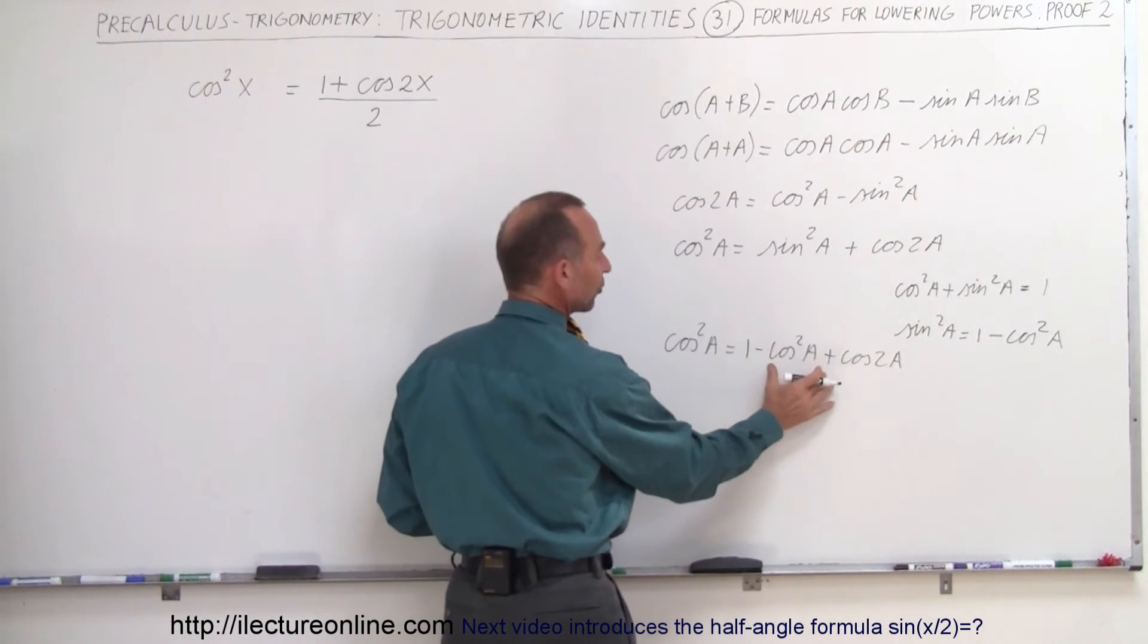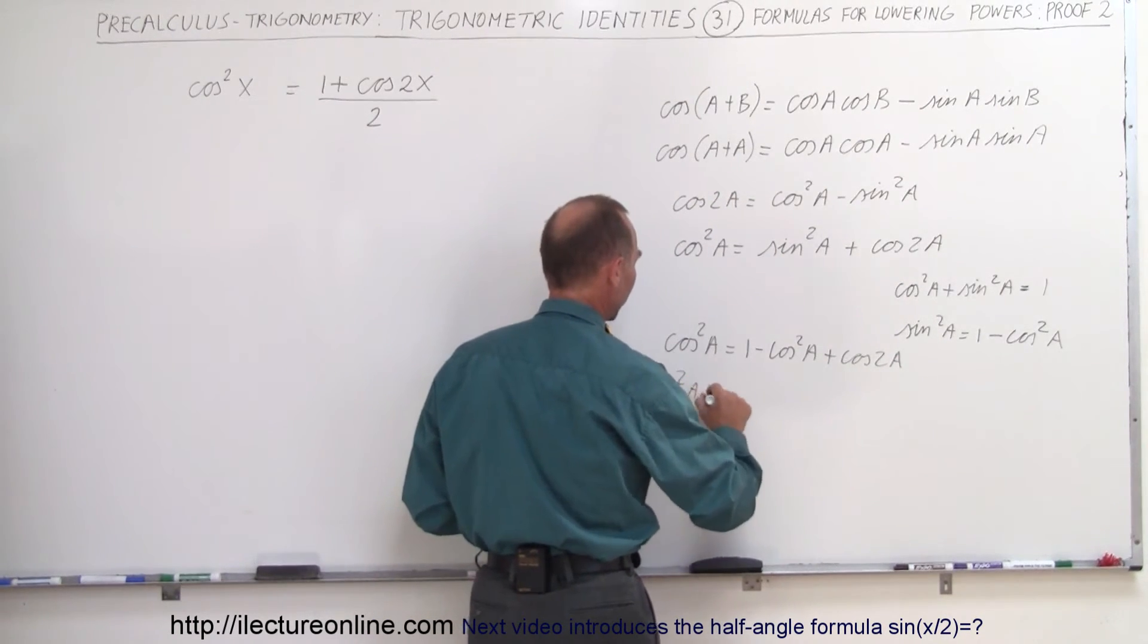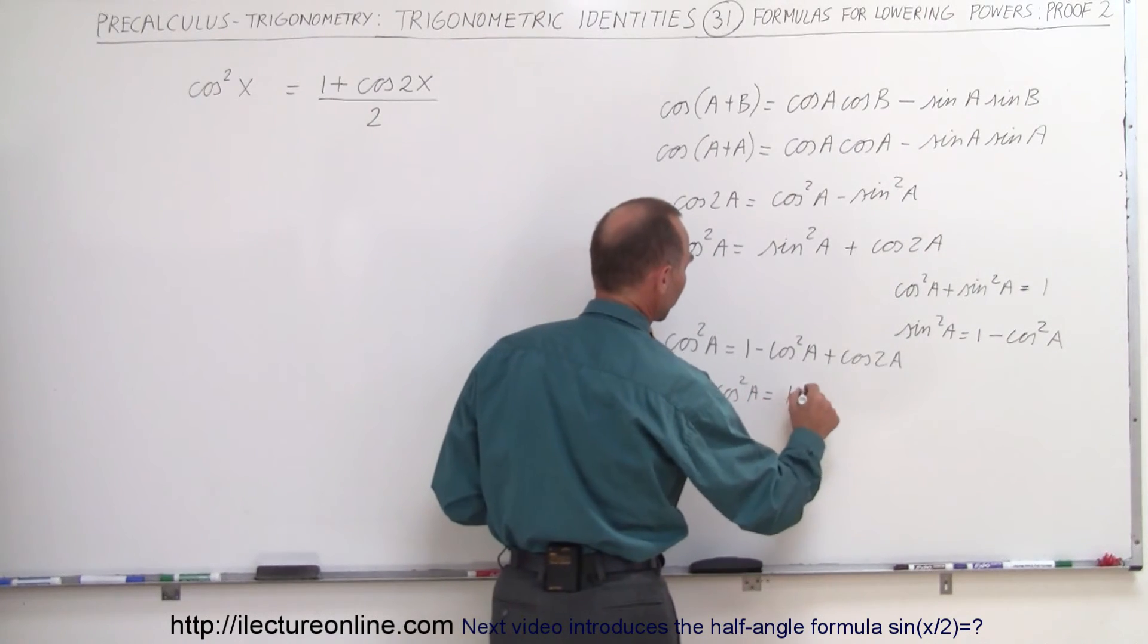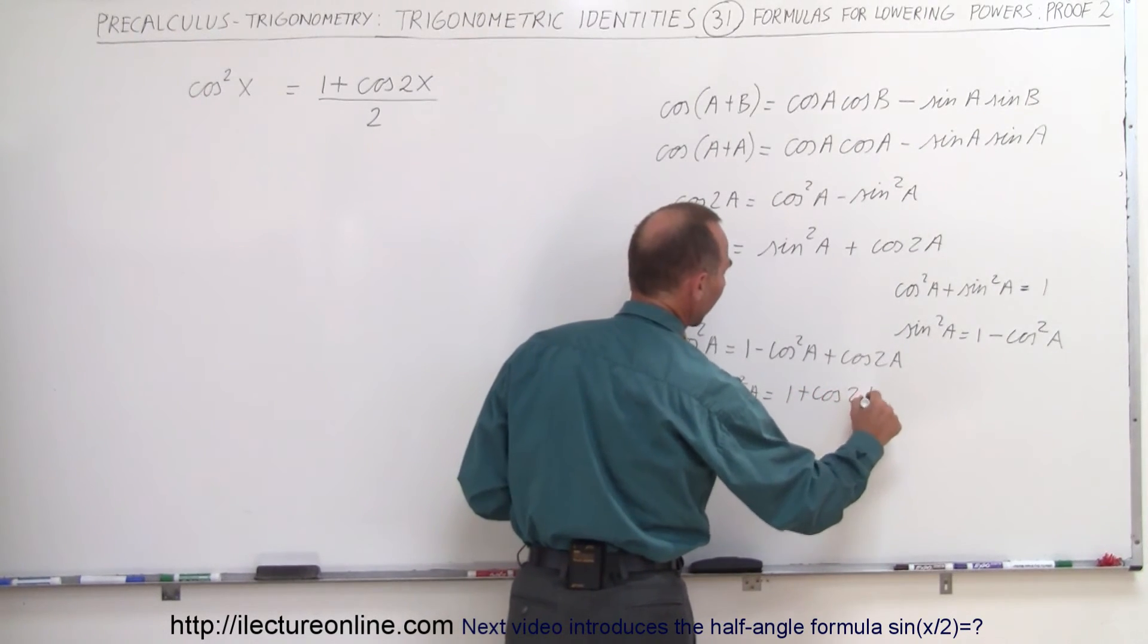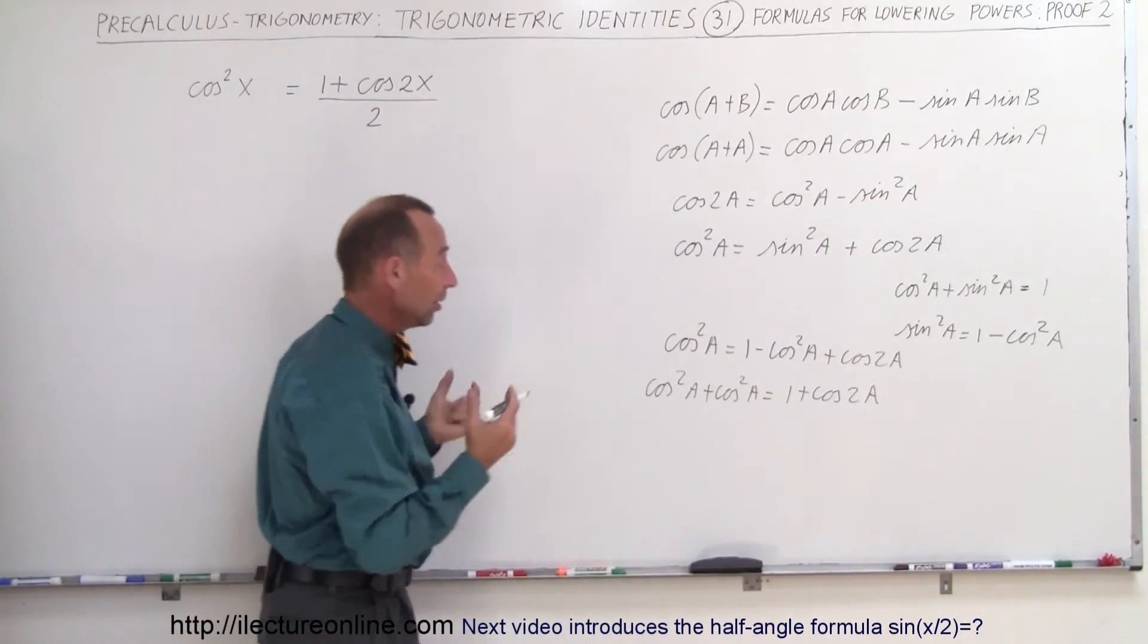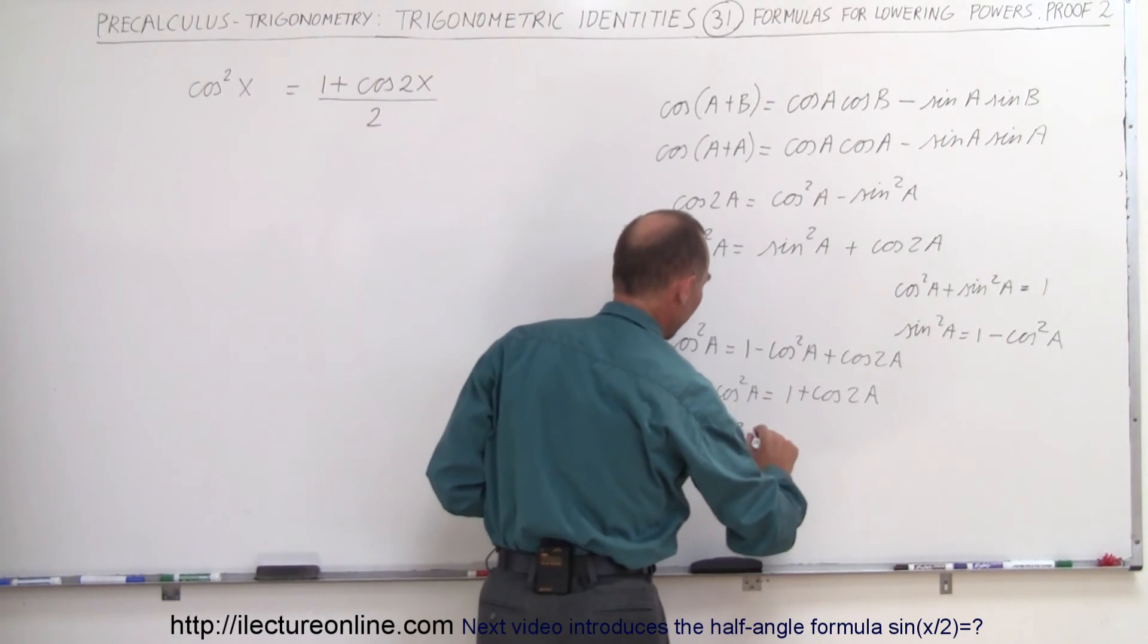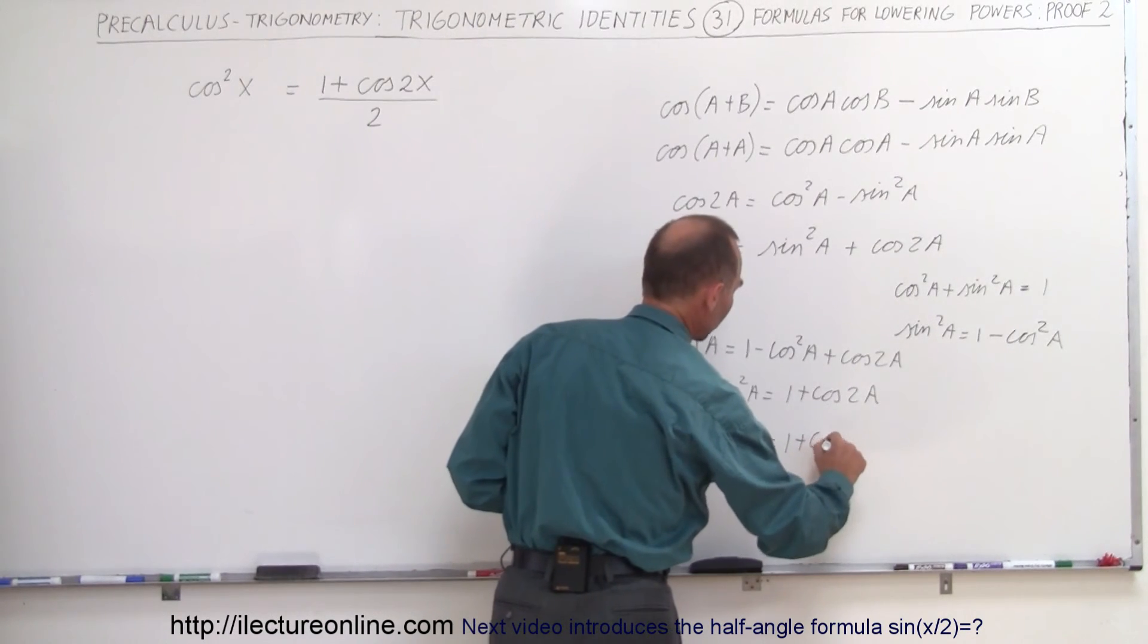Then again we move the cosine squared of a to the left side so now we have cosine squared of a plus the cosine squared of a is equal to 1 plus the cosine of 2a. Now you can start seeing that this is beginning to look like what we have over here. So now we have 2 times the cosine squared of a is equal to 1 plus the cosine of 2a.